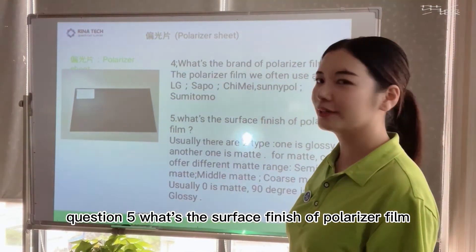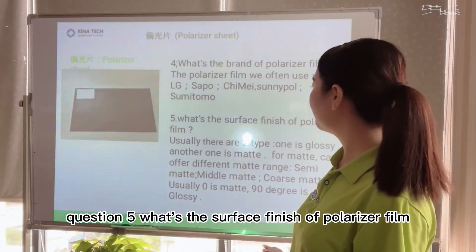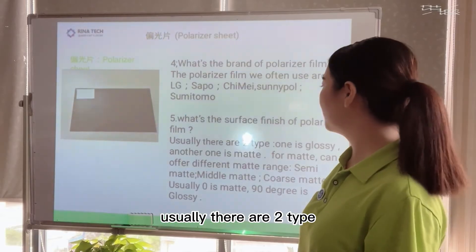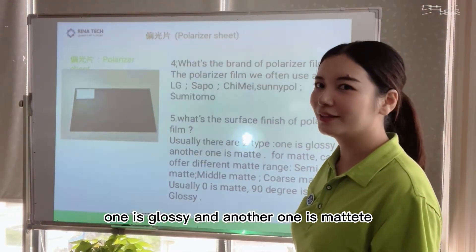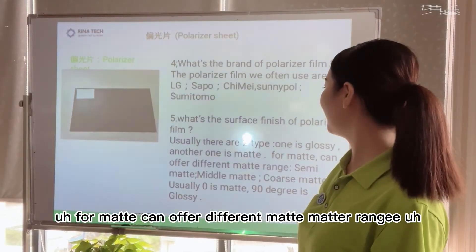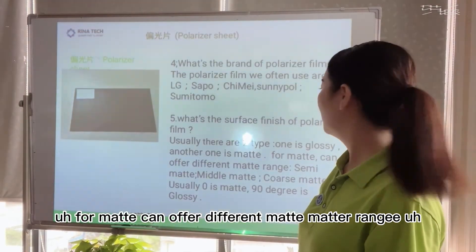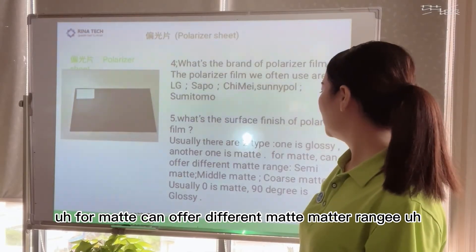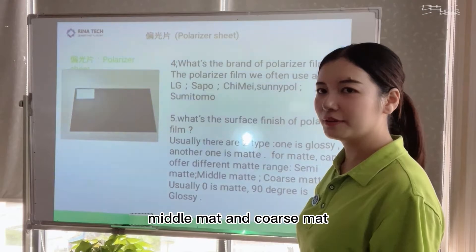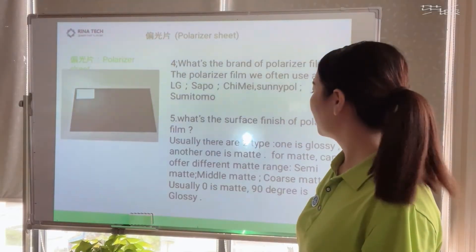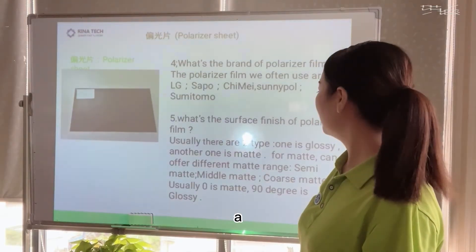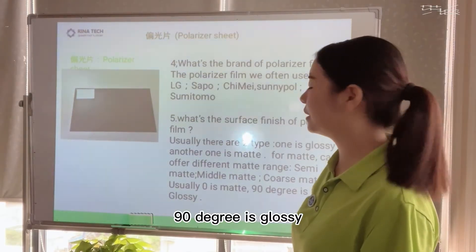Question five: what's the surface finish of polarizer film? Usually there are two types. One is glossy and another one is matte. For matte, it can offer different matte ranges like semi matte, middle matte and coarse matte. Usually 0 degree is matte and 90 degree is glossy.